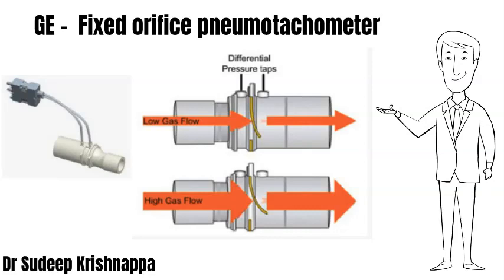Having a fixed orifice introduces a new set of problems. If the orifice is too small, it will be effective in measuring low flows as it can generate a measurable pressure drop even with low flows, but as flows increase it will act as an obstruction. Alternatively, if we have a large orifice, it will be effective in measuring high flows, but when the flow is low it will not generate an effective pressure drop, making it difficult to measure flow.